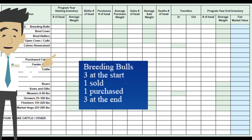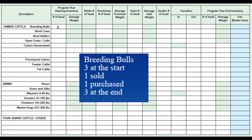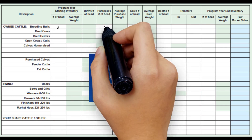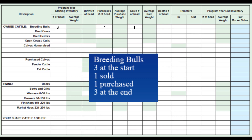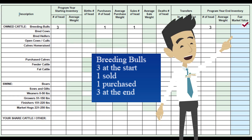Here is the information on breeding bulls for the year. He had three breeding bulls at the start. He sold one and purchased one, leaving three at the end of the year. When we are done with a row, we'll put in a check mark so we know that row is completed.